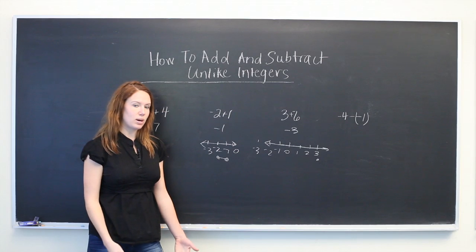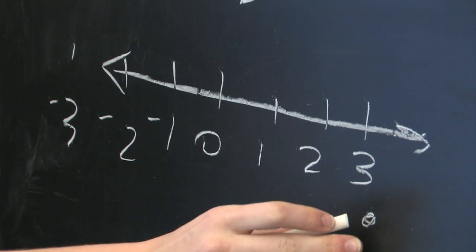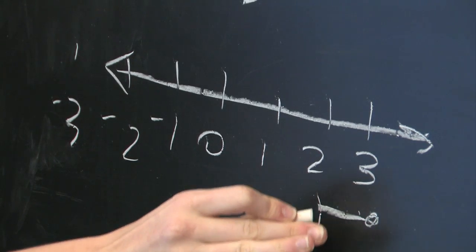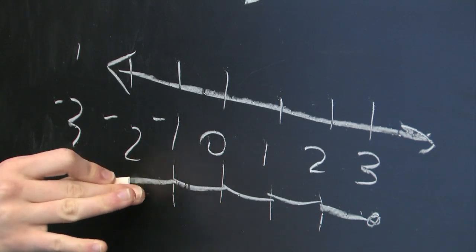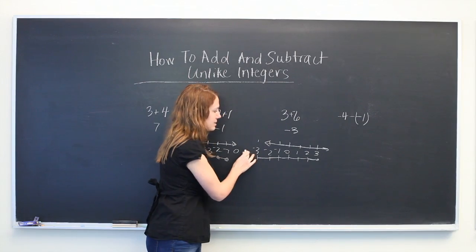Counting 1, 2, 3, 4, 5, 6, you end up at -3.